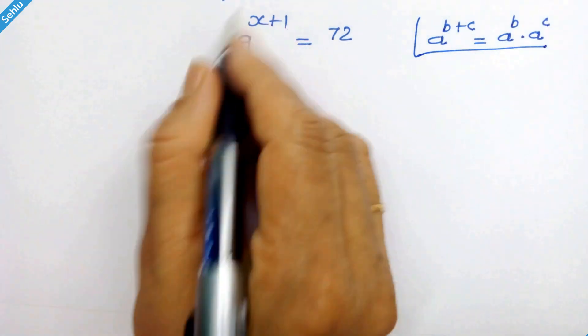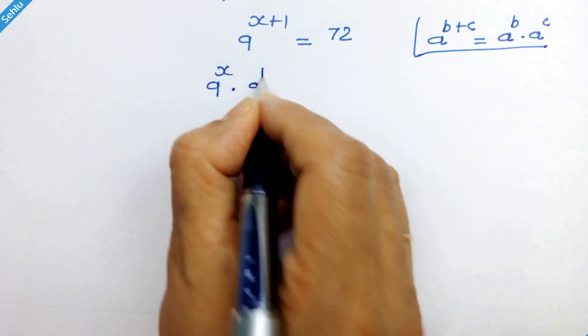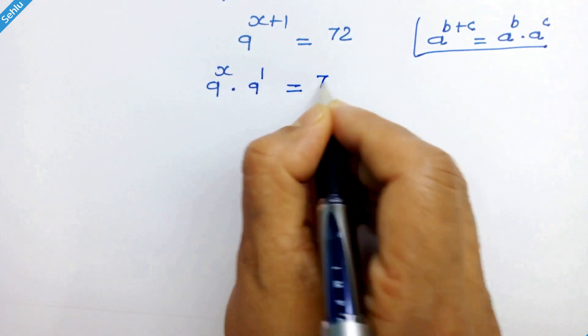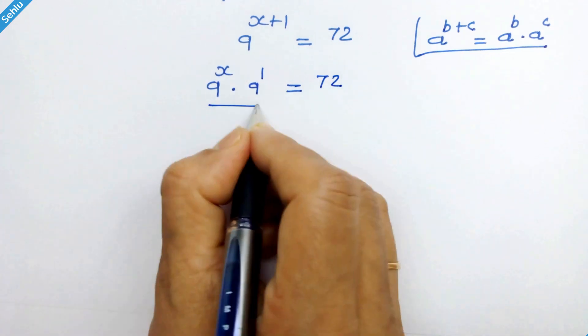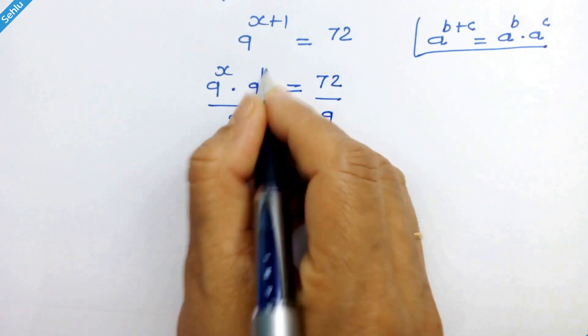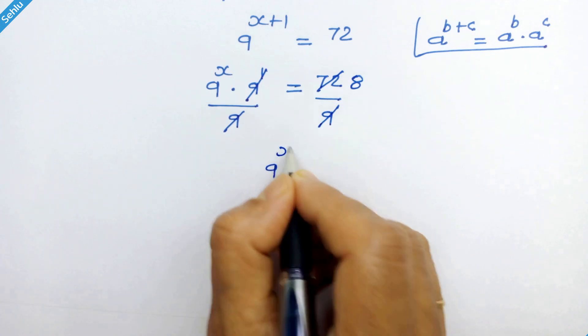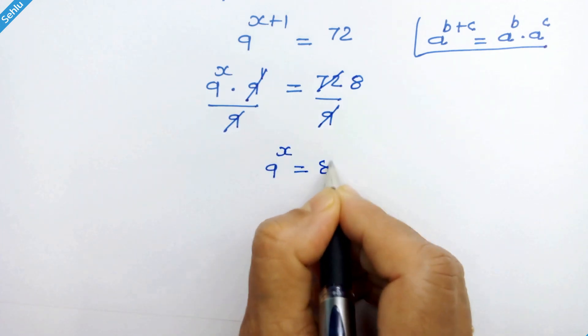As per this rule, this part can be written as 9 raised to x times 9 raised to 1 is equal to 72. Now we will divide by 9 on both sides. So these get cancelled out and here we have 8. In the next step we have 9 raised to x is equal to 8.